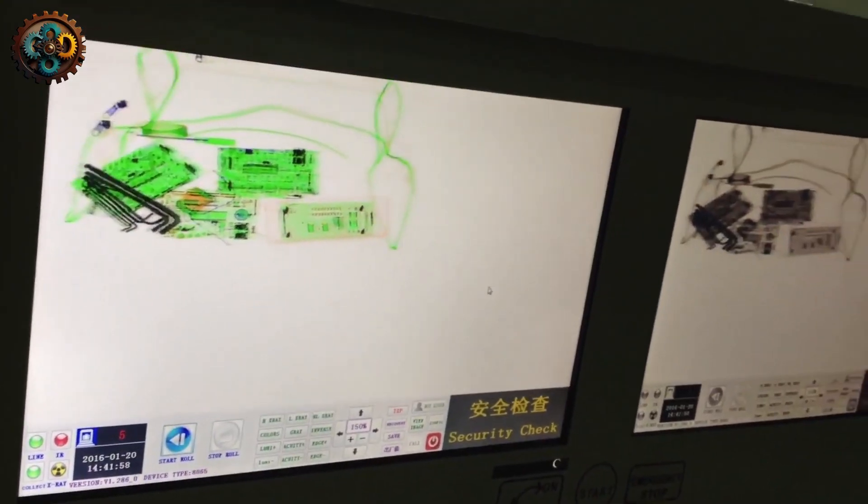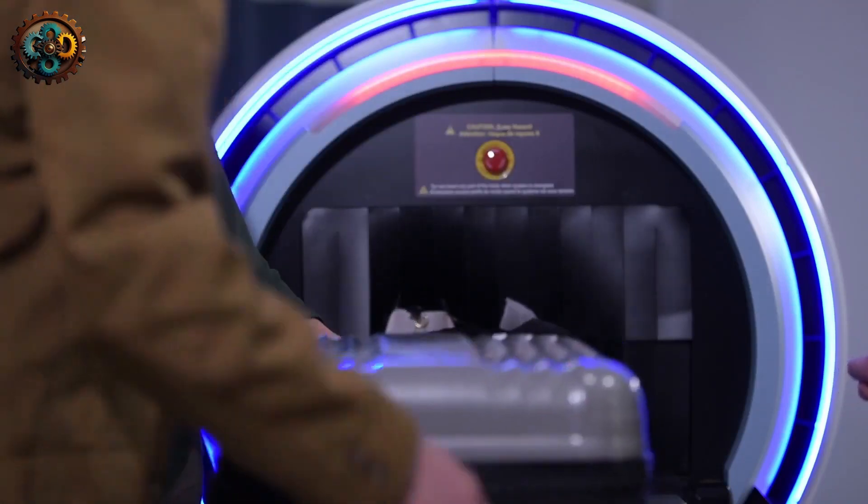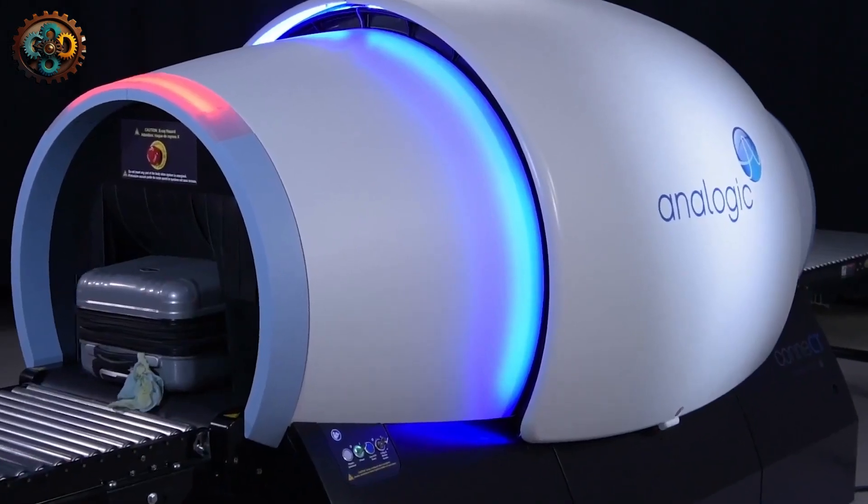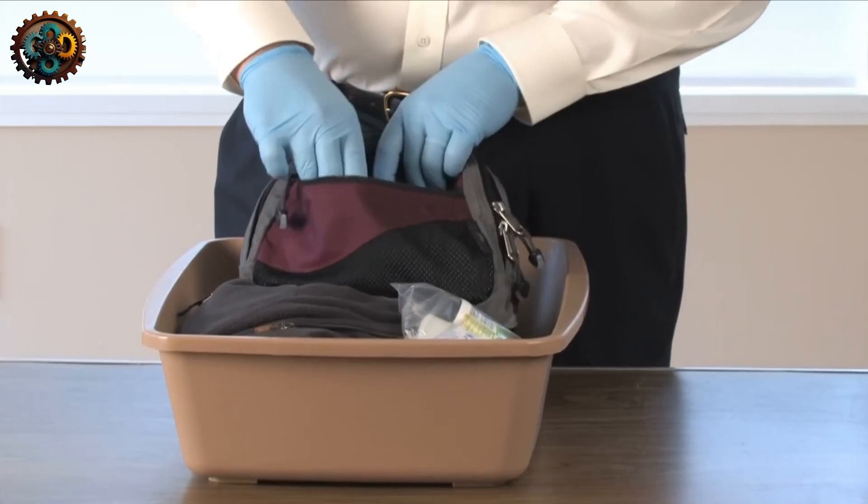The next generation of security scanners uses x-ray scattering and diffraction to analyze materials, allowing them to distinguish between liquids. Currently, this method is too slow to use for regular airport checks, but has been applied in baggage check-in halls.